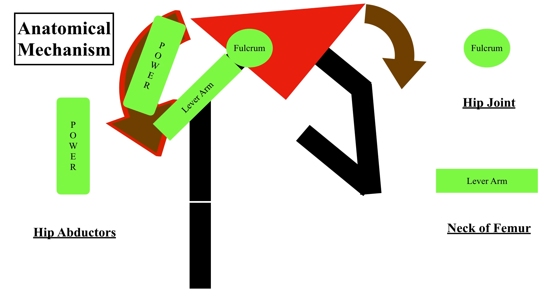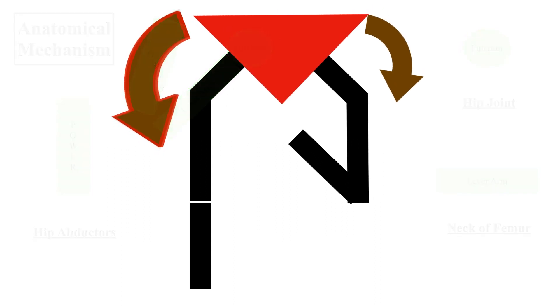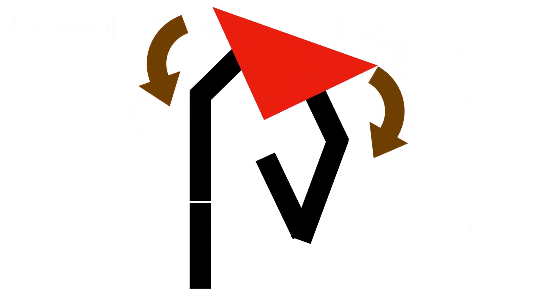Now whenever there is a problem in either the fulcrum or the lever arm or the power this mechanism is lost and the patient will have a Trendelenburg test positive in which the side of the pelvis which is unsupported dips down and that is called positive Trendelenburg test.